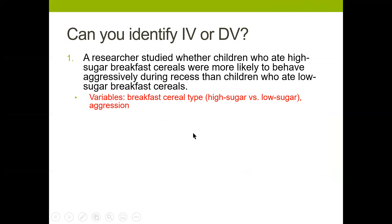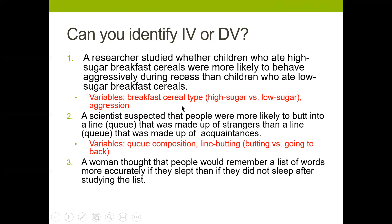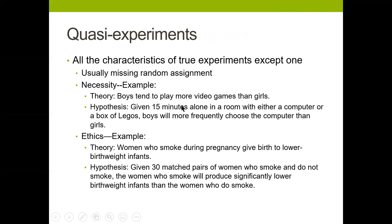Another example: a researcher studied whether children who ate high-sugar breakfast cereals were more likely to behave aggressively during recess than children who ate low-sugar breakfast cereals. The variables are breakfast cereal type and aggression. The independent variable is breakfast cereal type; the dependent variable is aggression. They hypothesize that level of aggression at recess would depend on what breakfast cereal the children ate.